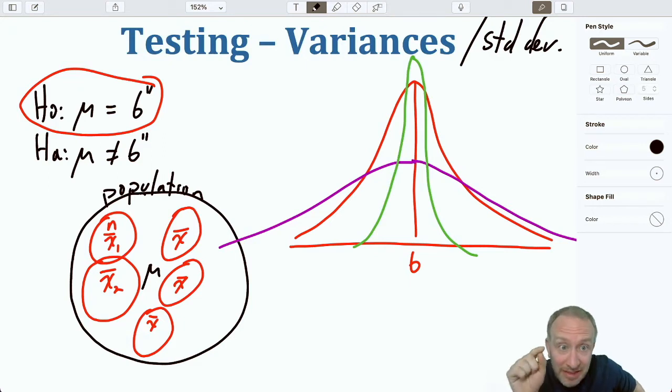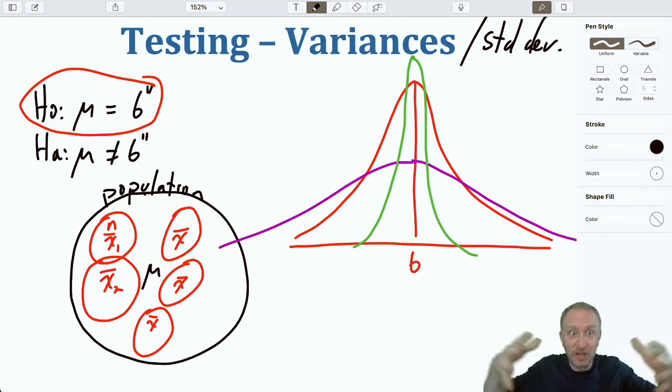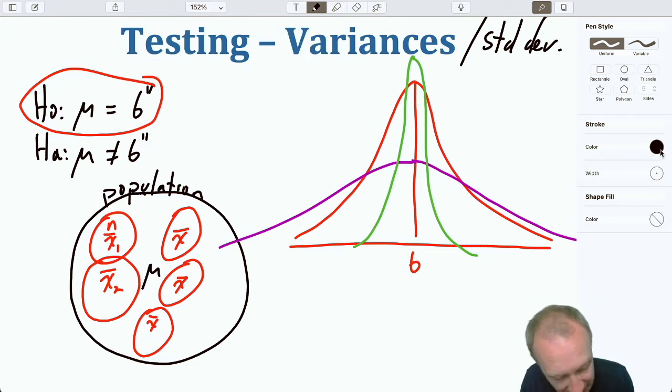Well it's important that it be very precise. We can't have a manufacturing process that produces something with an average of 6 inches but has a really large variance. Because all of those parts that are too big or too small, maybe they're just completely useless. We really need it to be precise. So we need a really small variance as well.